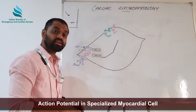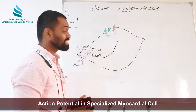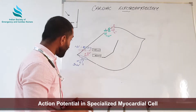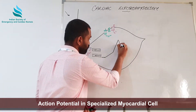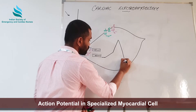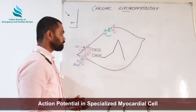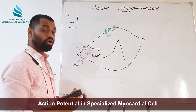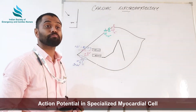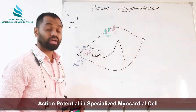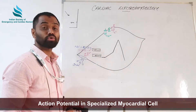With no more cations coming in and the cell losing cations, the cell repolarizes, bringing its potential back to negative baseline levels of minus 60 millivolts. This is the shape of the action potential curve in a specialized myocardium, or what we call an SA nodal cell.